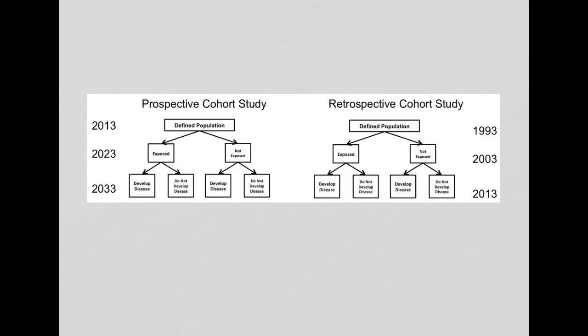All right, so this shows the difference between a prospective and retrospective cohort study. In both of these studies, the design is exactly the same. We have a defined population, a population that meets our eligibility criteria, meaning they do not yet have whatever disease outcome we're interested in, and maybe some other criteria. And we follow them for 10 years.